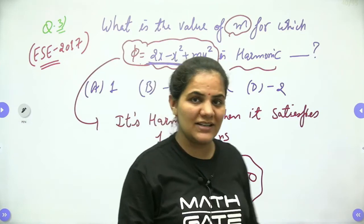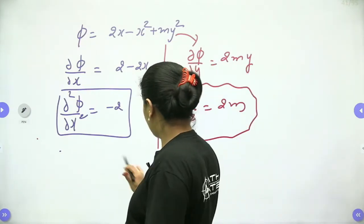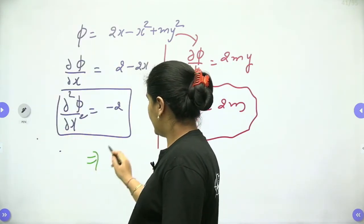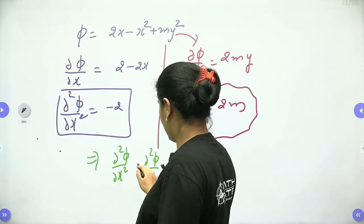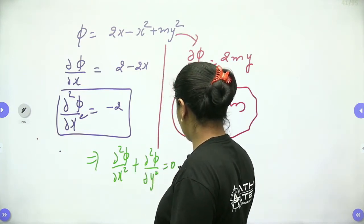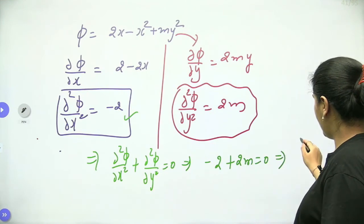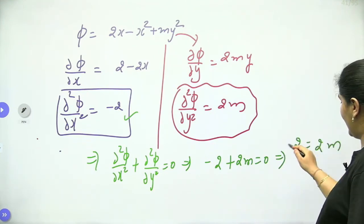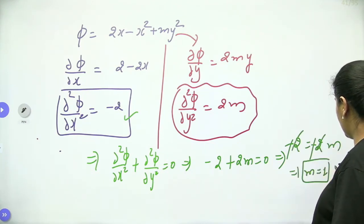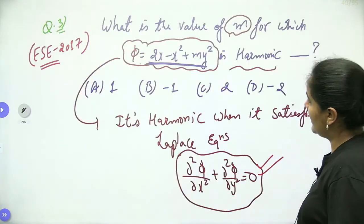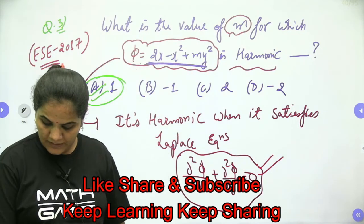Since the function is harmonic, it must satisfy the Laplace equation. Substituting into ∂²φ/∂x² + ∂²φ/∂y² equals 0 gives: minus 2 plus 2m equals 0, so 2m equals 2, hence m equals 1. Therefore, for m equals 1, the given function is harmonic.